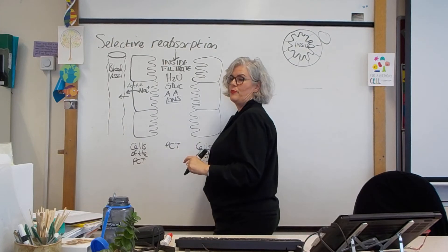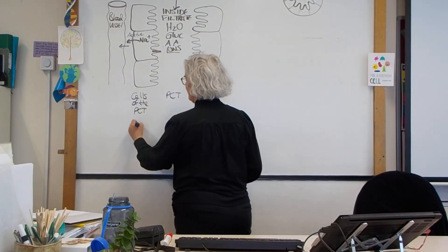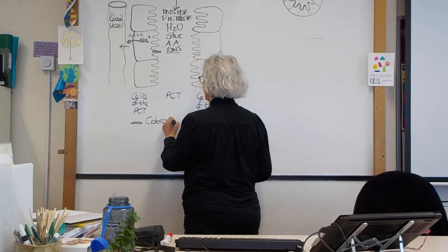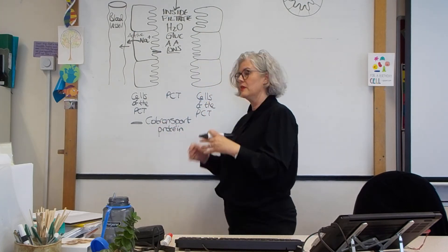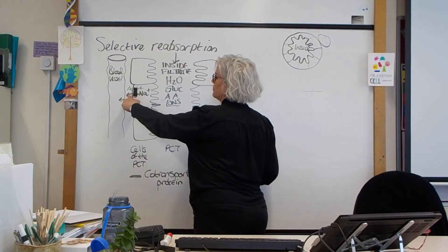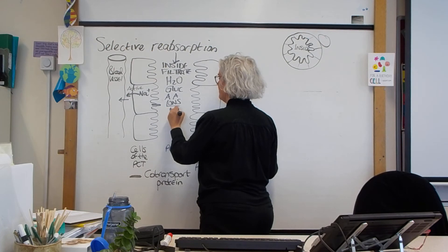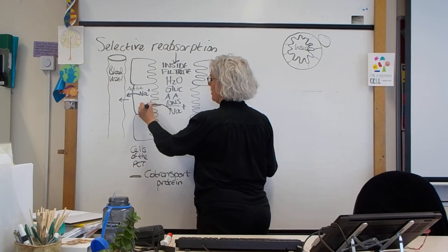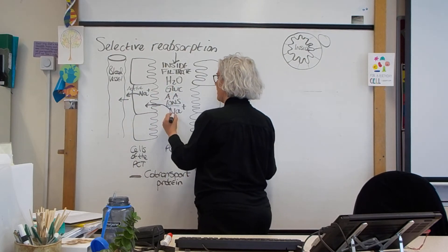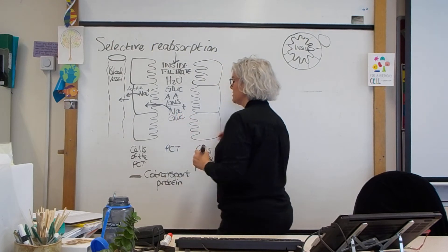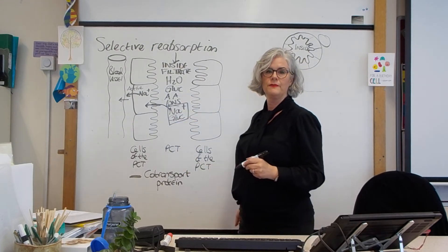Because we have sodium ions in the filtrate and a low concentration inside the cells, sodium ions will move into the cells down their concentration gradient. But when they do, they have to go through co-transport proteins on the cell membrane. Co-transport means it transports two things together. There are co-transport proteins for sodium ions and glucose, and co-transport proteins for sodium ions and amino acids.